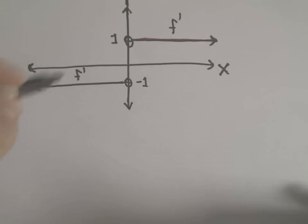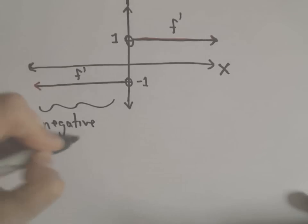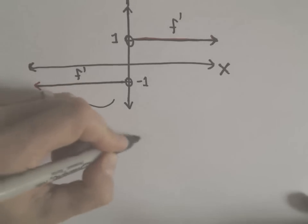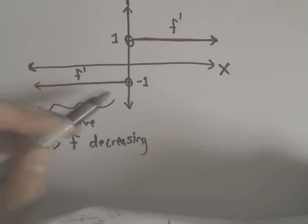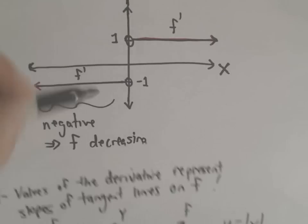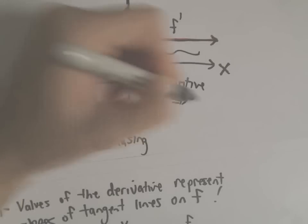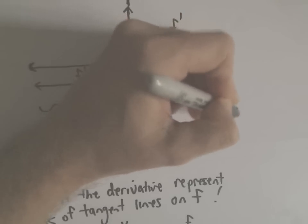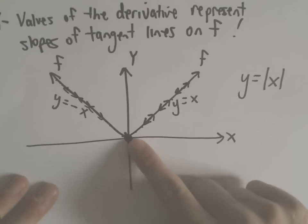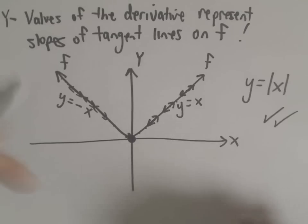Another useful thing to point out: if the derivative graph is negative, that corresponds to the original function decreasing. Notice where the derivative was negative — the function is decreasing as we move left to right. And wherever the derivative graph is positive, the original function is increasing. So this certainly would be a possible graph for a function that agrees with that derivative graph.